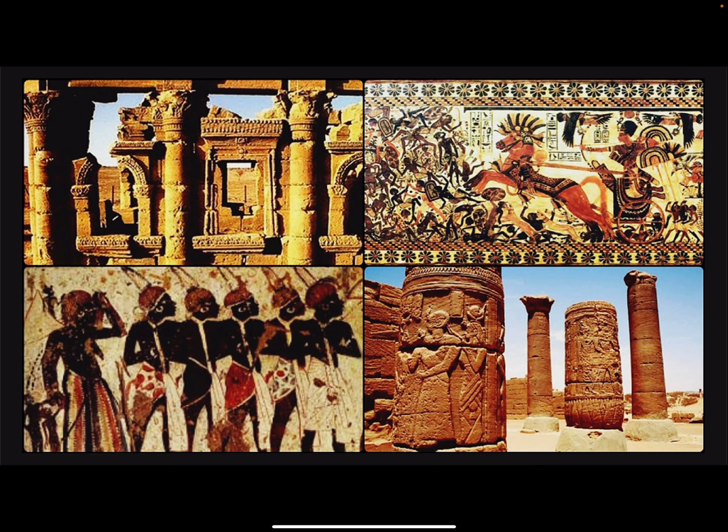The royal families of the kingdoms of Egypt and Kush often intermarried, but Kushite culture was distinct. Egyptian art distinguished the people of Kush by their dress, appearance, and even method of transportation. The Kushites had their own language and script, and maintained a complex economy based on trade and industry. They developed a complex urban society with uniquely high levels of female participation at the time.